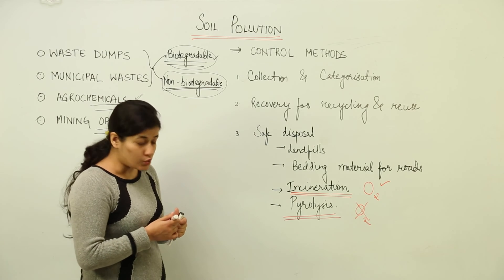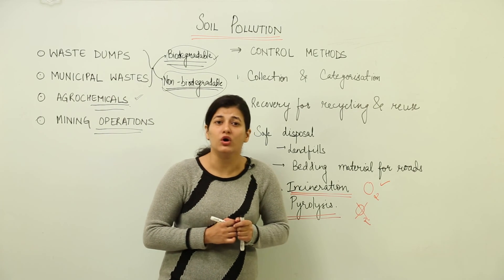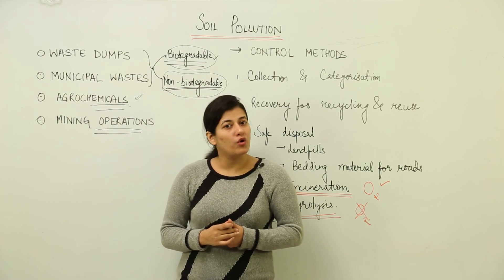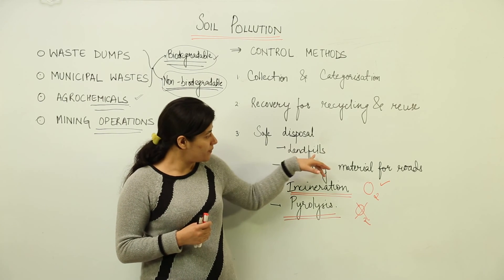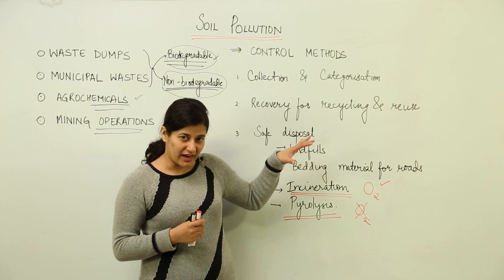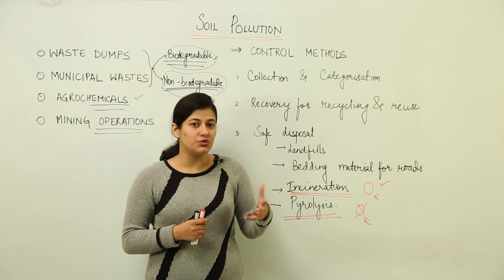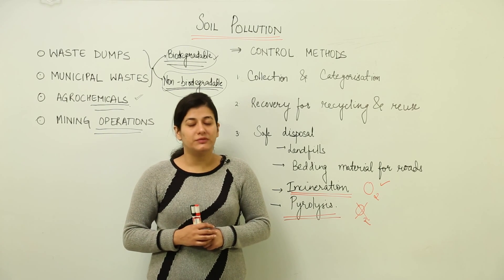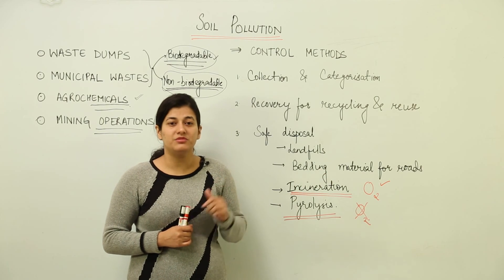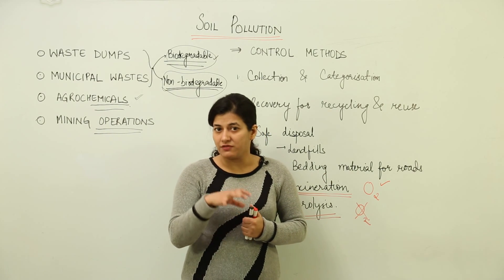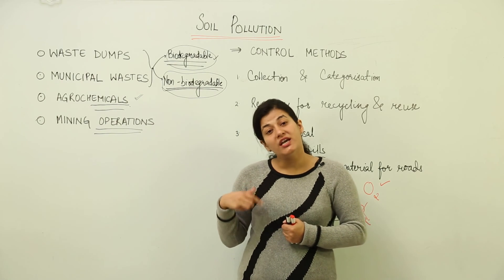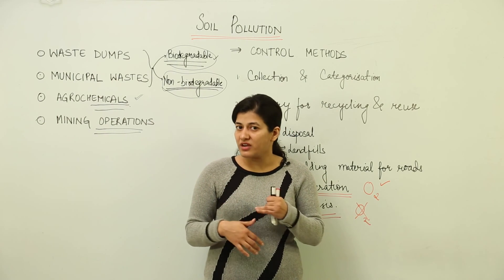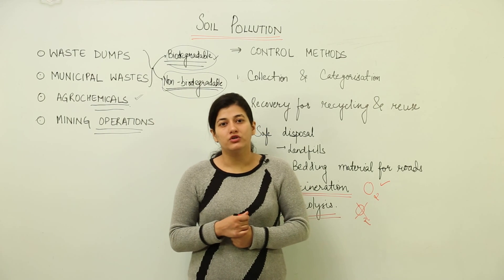For organic or biodegradable waste, landfill methods allow decomposition to convert the entire waste into manure. Additionally, the sludge produced by sewage treatment plants can also be converted into organic manure instead of being discarded. In these ways, there are various methods by which soil pollution can be controlled.